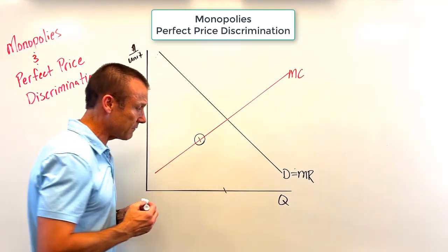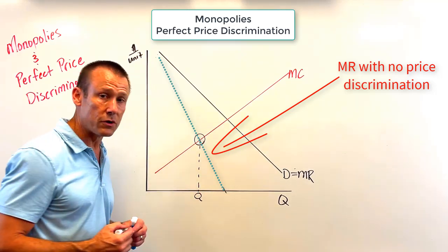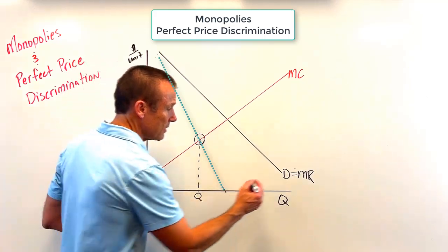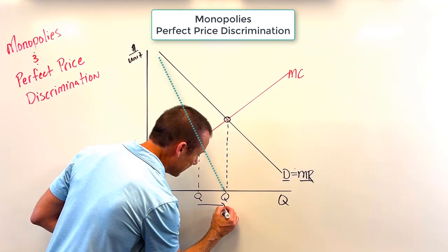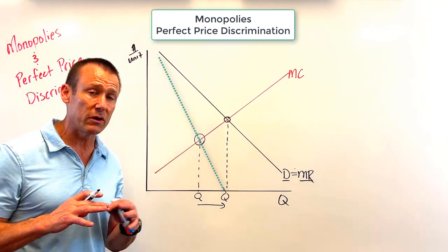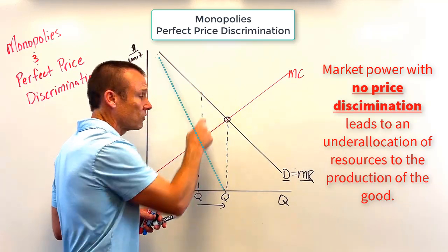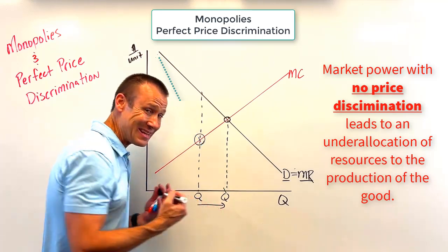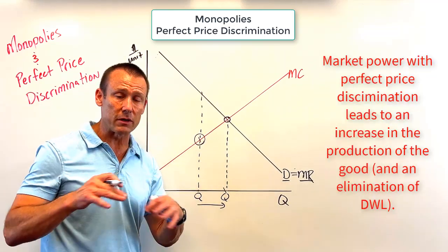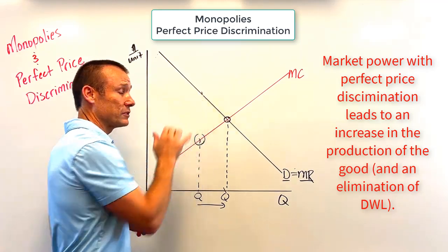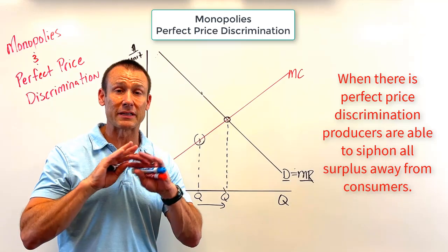With perfect price discrimination, demand equals MR. Notice the old MR intersecting MC is still there — that's the output level with no price discrimination. With perfect price discrimination, demand becomes MR, so MR equals MC at a higher output level. As long as there are no externalities, you've eliminated the deadweight loss that existed under the monopoly with no price discrimination.